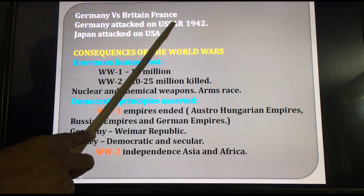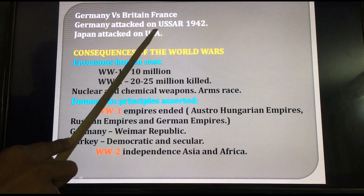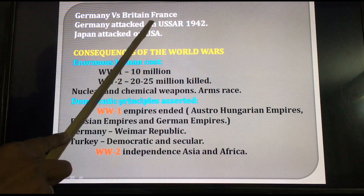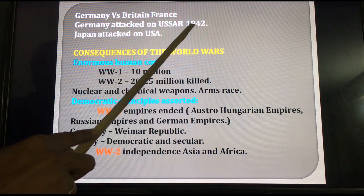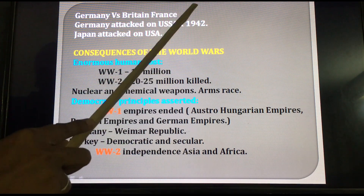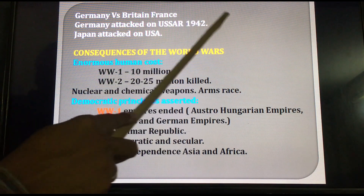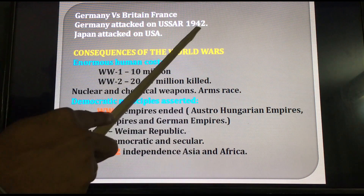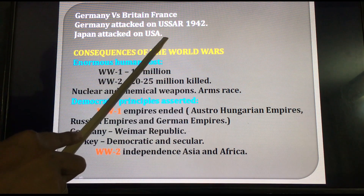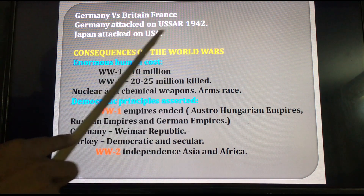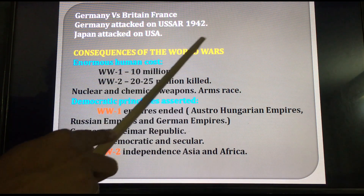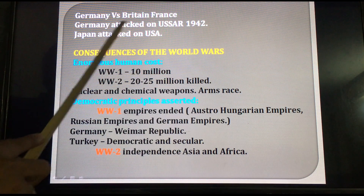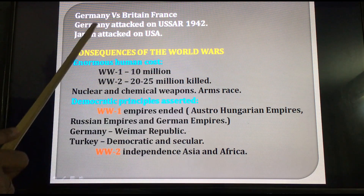Germany versus Britain and France. Germany attacked the USSR in 1942, but it failed. This was connected to the beginning of the Second World War, with the period 1939 to 1945. During the Second World War, Japan also attacked the USA. Pearl Harbor belongs to the USA, and Japan attacked Pearl Harbor. That is why the USA declared war against Japan, meaning the USA also joined the Second World War.